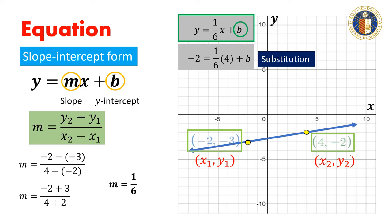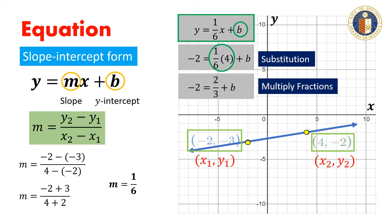Now we solve this equation for b. First, we determine 1/6 times 4. Note that there's a common factor of 2, so we would have -2 equals 2/3 plus b. Now we subtract 2/3 on both sides, and we would have -2 and 2/3 equals b.